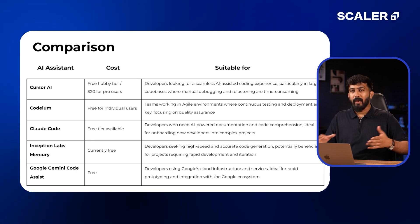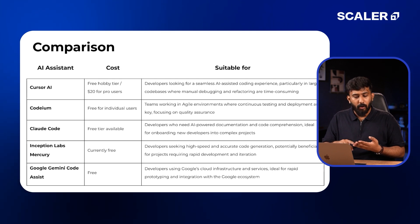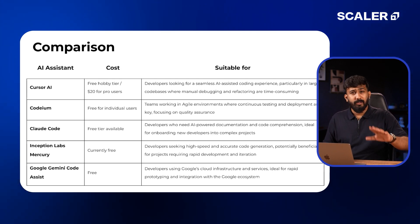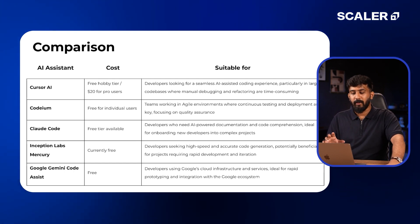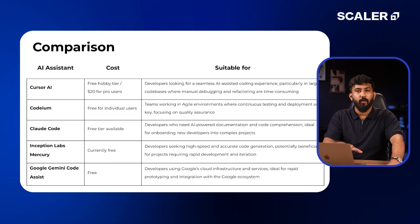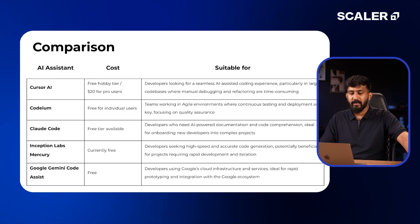Now let's do a quick comparison of the AI assistants I want to talk about in this video. First we've got Cursor AI, then Codium, Cloud Code, Inception Labs Mercury, and Google Gemini Code Assist. Codium and Google Gemini Code Assist are pretty much compatible with any IDE — Codium is available for 21 different IDEs, and similarly Gemini Code Assist is also available for a lot of IDEs.